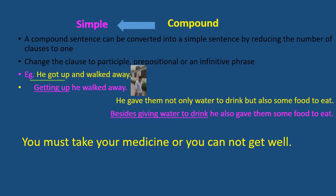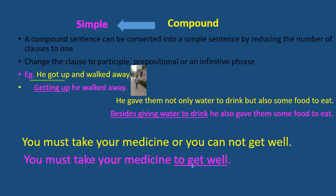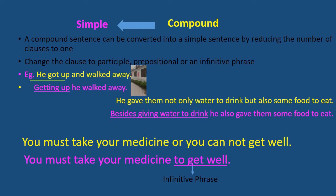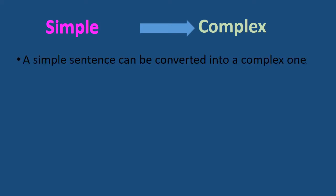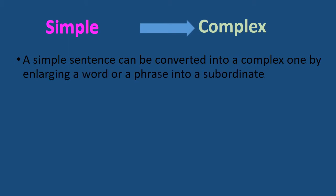Another example using an infinitive phrase: 'You must take your medicine or you cannot get well.' We change the clause 'you cannot get well' into an infinitive phrase: 'You must take your medicine to get well.' Now, for simple to complex: a simple sentence can be converted into a complex one by enlarging a word or phrase into a subordinate clause.